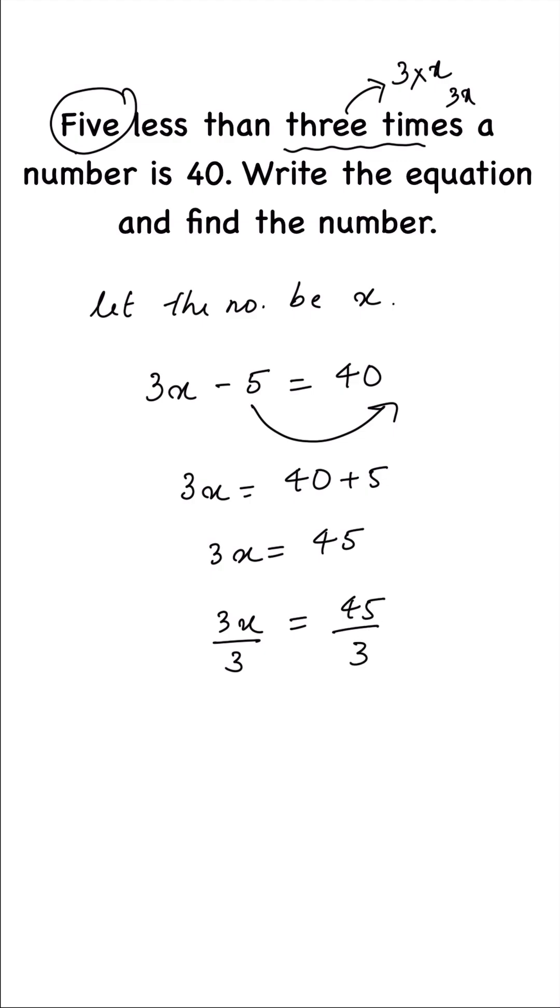The left side, the three will get cancelled, and on the right side, 45 divided by 3 is 15. Therefore, x equals to 15. So this is the number.